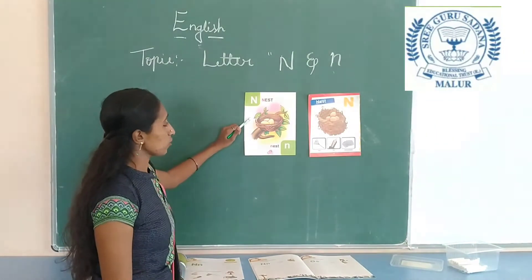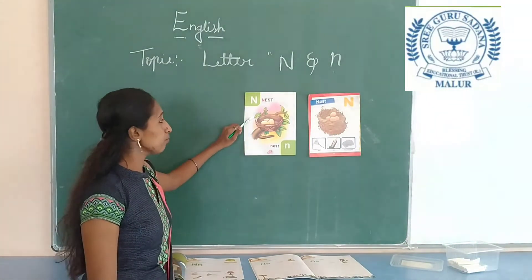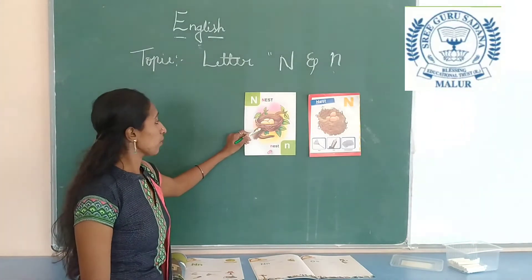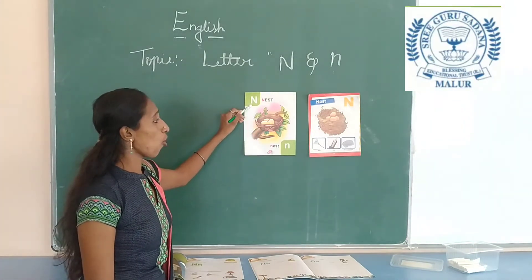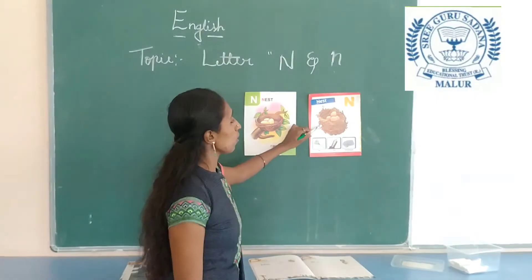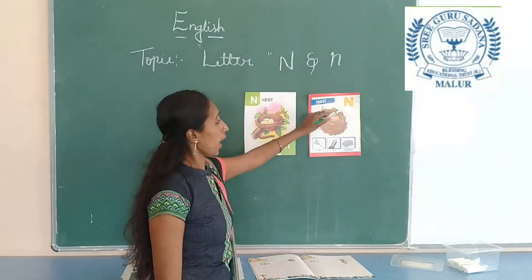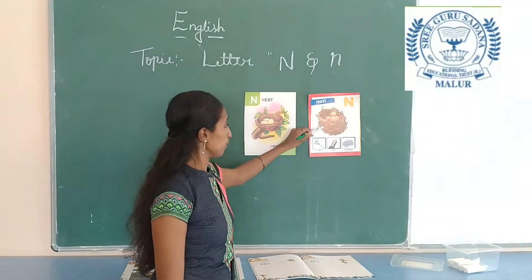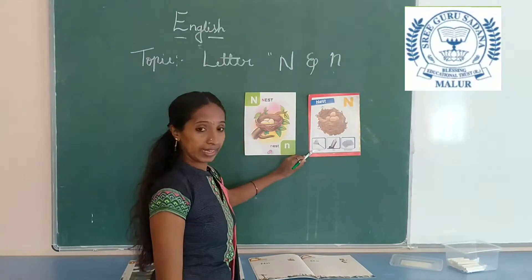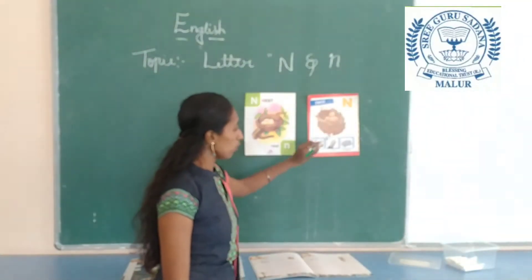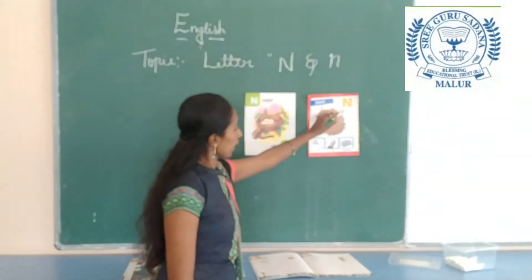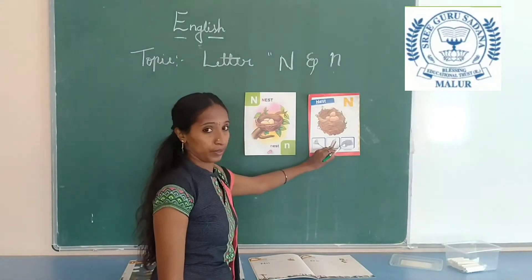Look at the picture, children. N for nest. N for nest. Here also N for nest. N for net. N for nib. N for newspaper.